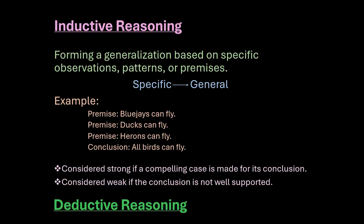Inductive reasoning is considered strong if a compelling case is made for its conclusion, and it's considered weak if the conclusion is not well supported. Inductive reasoning is often used in court cases where you have evidence for somebody doing something, and sometimes the jury ends up making the wrong decision based on the evidence, but they are basing their decision on the information they are given.